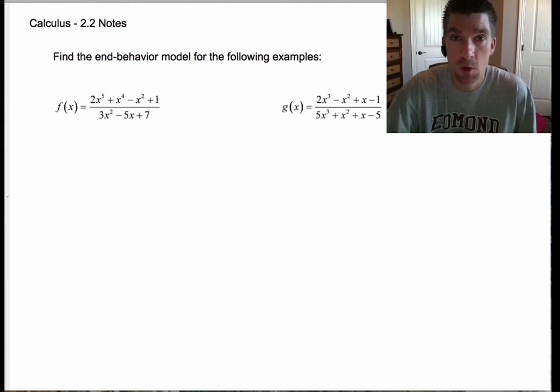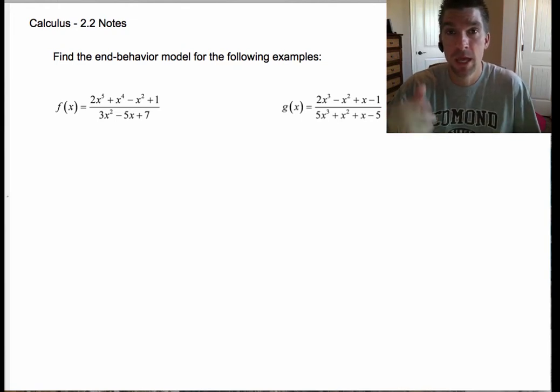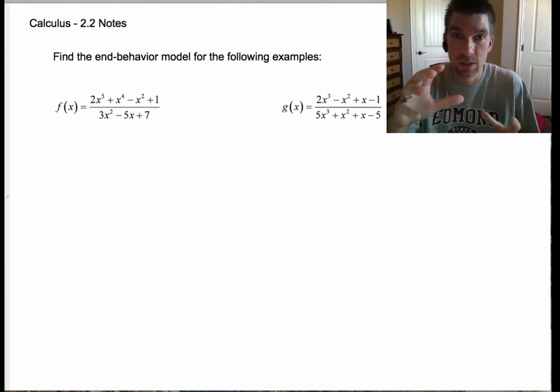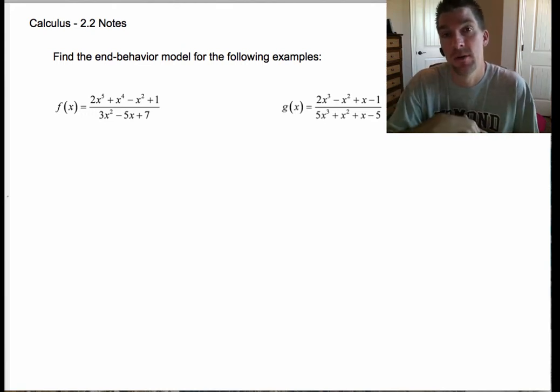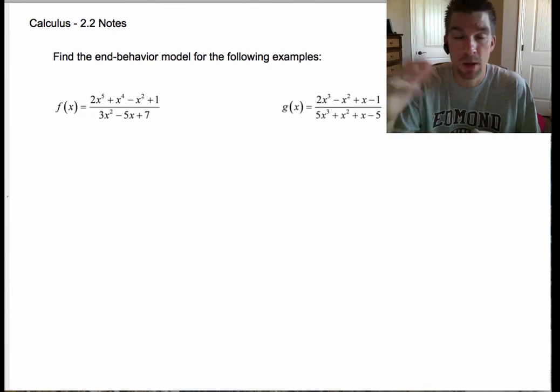It's really pretty simple. If you go back and look at the previous example we were just talking about, the end-behavior model actually was the leading terms reduced down, and that gave us an answer of 1. That's a big deal because if we have a polynomial divided by another polynomial, we can look at what that end-behavior is going to look like based on what those leading terms are.